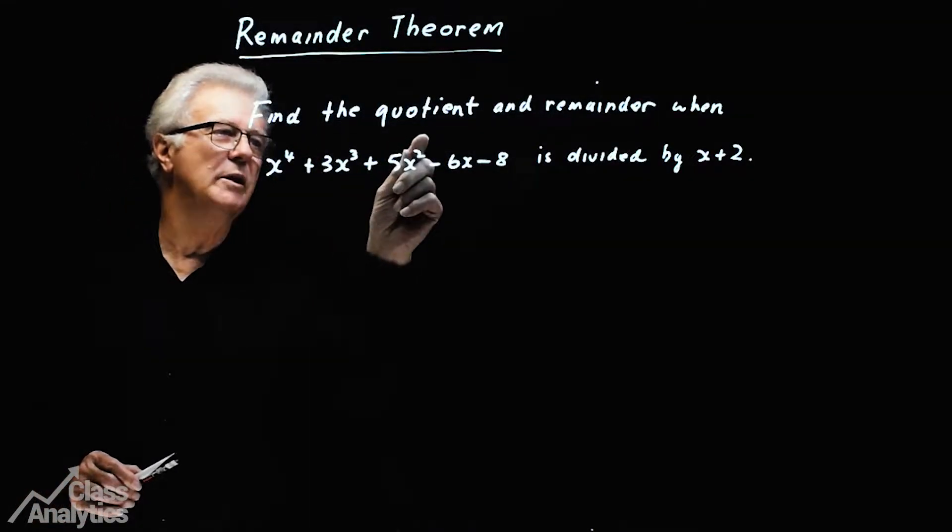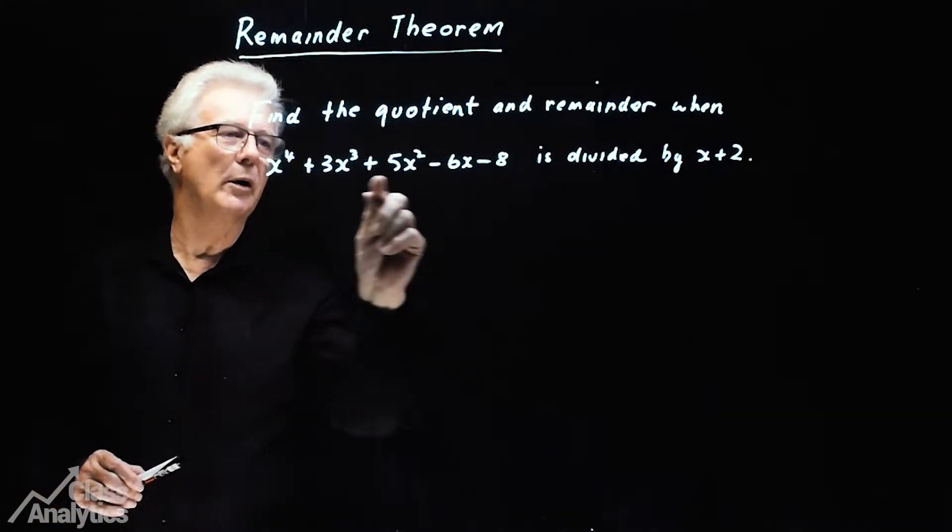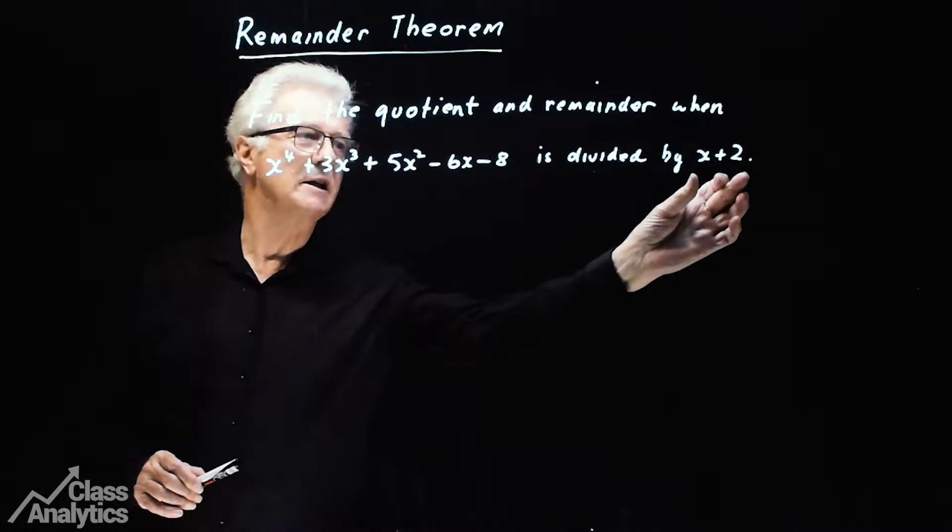In this problem we have to find the quotient and the remainder when this polynomial is divided by x plus 2.